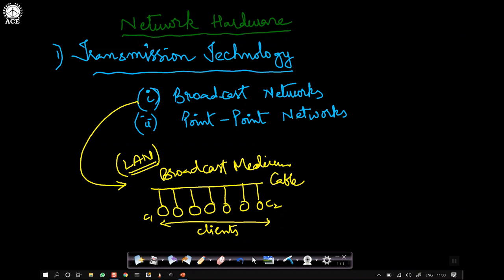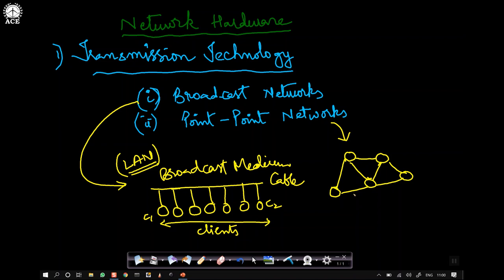The second type is point-to-point network. As the name says, there exists a communication link between every pair of computers — from one computer to another computer. I may have a link present between these two, a link here, a link here — something like this. This is called point-to-point. Here I do not have broadcast.